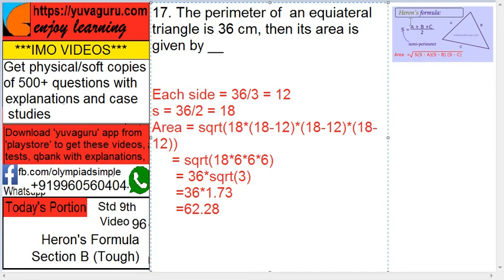As per Heron's formula, S equals A plus B plus C upon 2, so that is 36 upon 2, which is 18. So area equals square root of 18 into S minus A